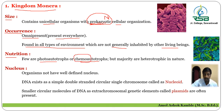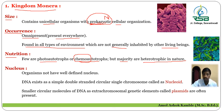Chemo autotrophs use chemical reactions — the energy developed from these chemical reactions is used by the organisms to survive. So the mode of nutrition is either photo autotrophic or chemo autotrophic. But the majority of organisms in Kingdom Monera are heterotrophic in nature, meaning they depend on other organisms for their nutrition.